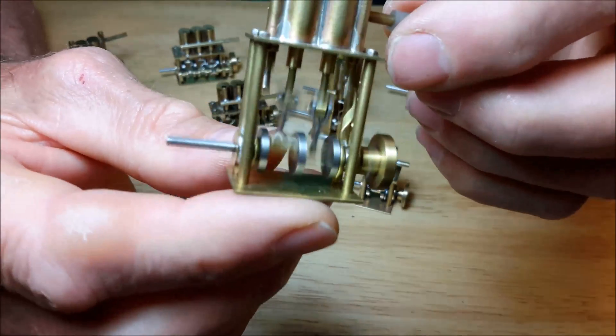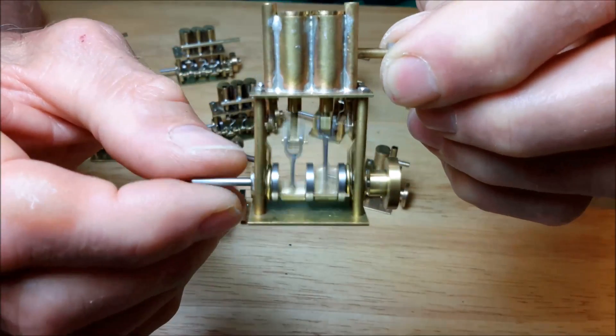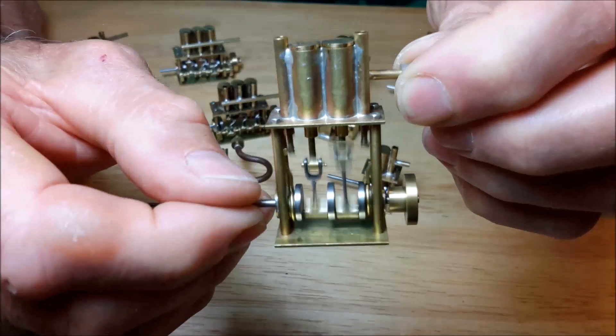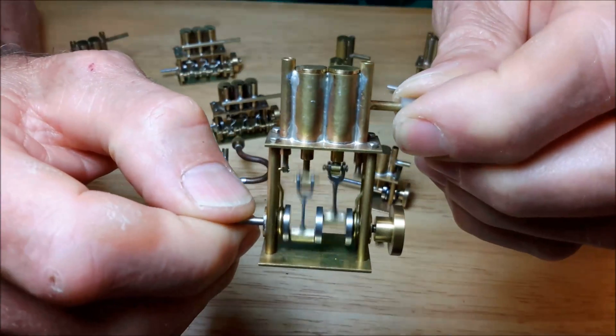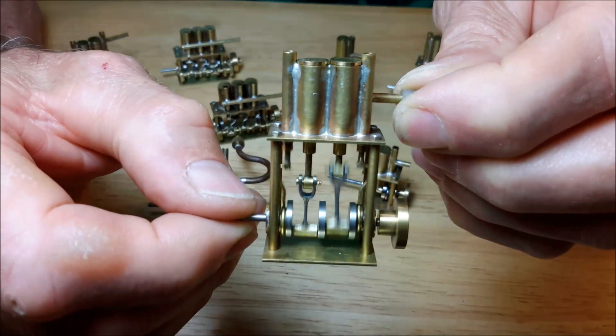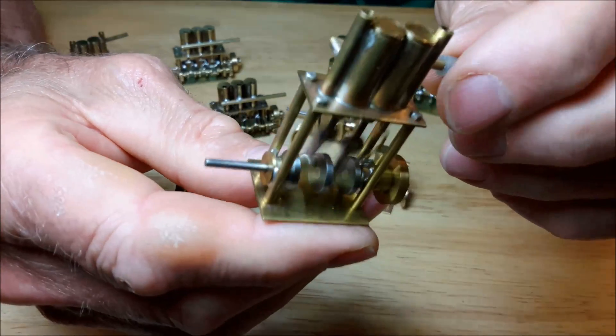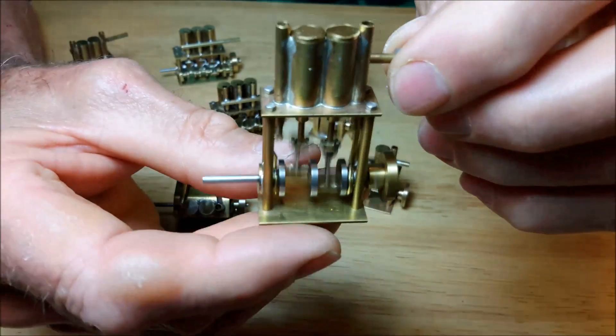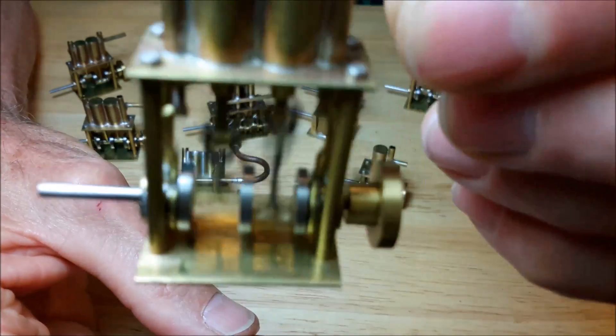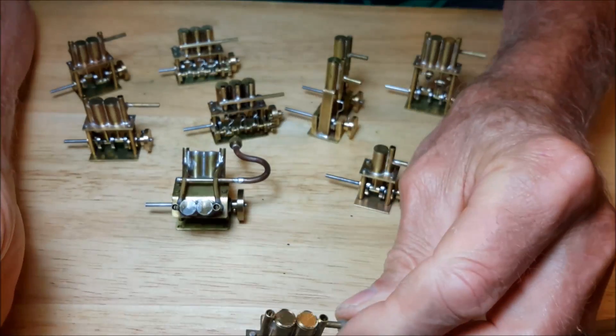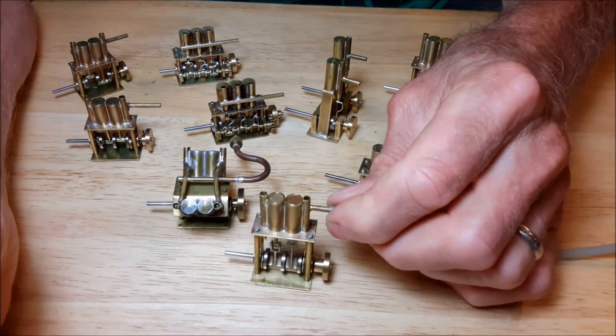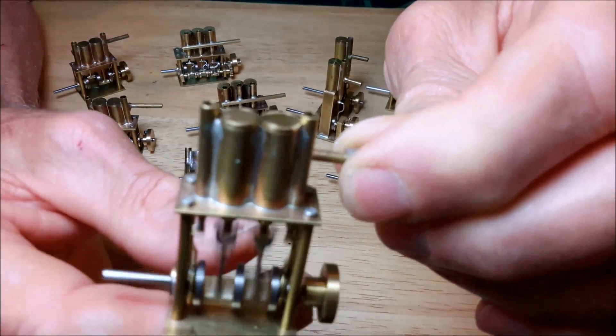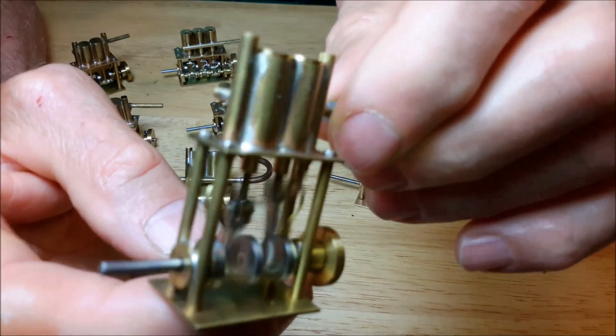So this engine has a power stroke every 90 degrees of rotation of the crankshaft, so it's got pretty good torque. It'll even start under a load, itself starting. Not nearly as balanced as the three-cylinder so it does kind of hop around a little bit, but if you fasten it down that's not even noticeable.